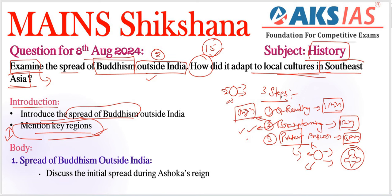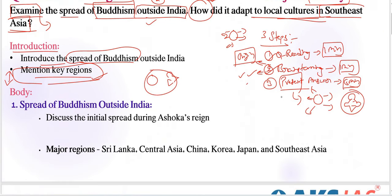Next, we can draw a flowchart or map. Coming to the body part, we need to address the first important topic: examine the spread of Buddhism outside India. First, we need to write an explanation of the initial spread during Ashoka's reign — Buddhism's spread outside India can be traced back to Ashoka, when he sent missionaries to various regions.